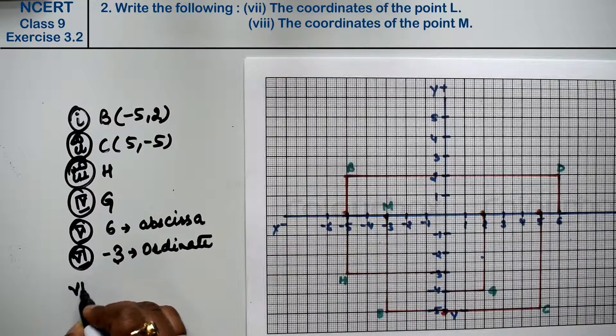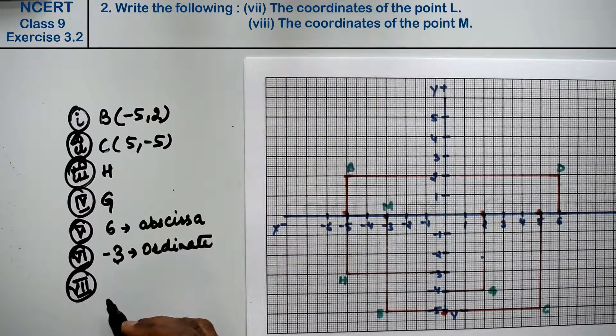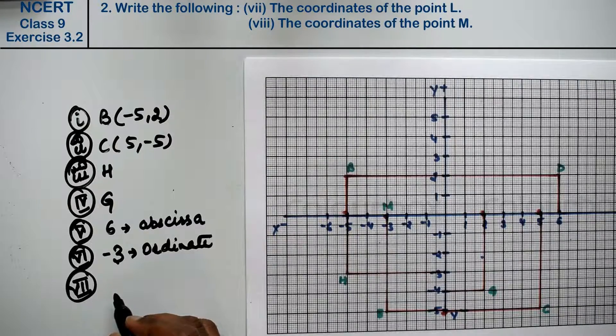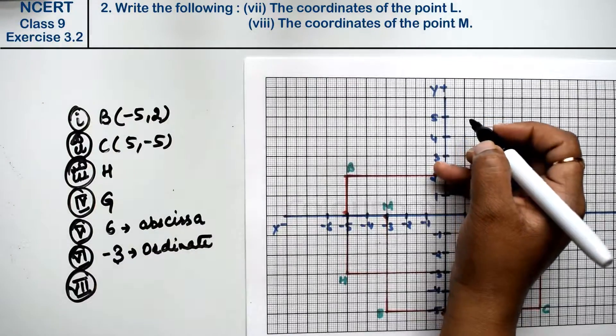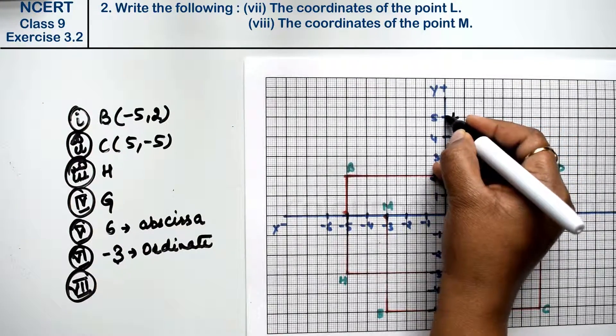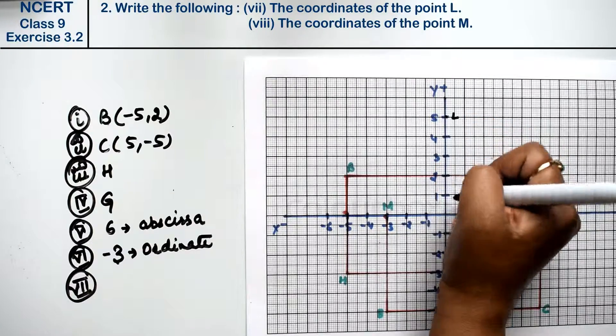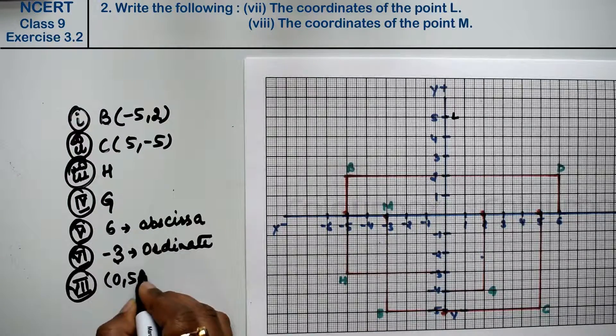Let's do seventh part. Seventh part is the coordinate of the point L. Where is the L point? This is the L point. Right, friends? So what is the point? This is the point here. Y is 5 but x is 0. So, 0 and 5.